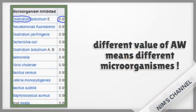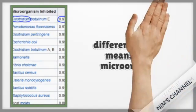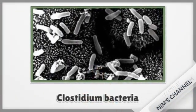The variation of aw can lead to the appearance of different microorganisms. Like the pathogenic bacteria Clostridium with aw equal to 0.97.